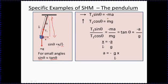If we resolve vertically, then vertically T cos theta is going up, mg is coming down, so we've got T cos theta equals mg.